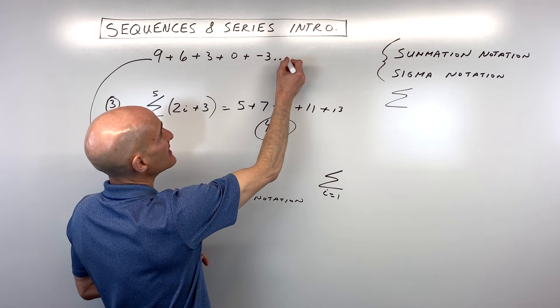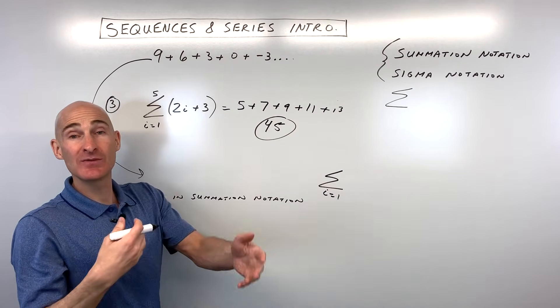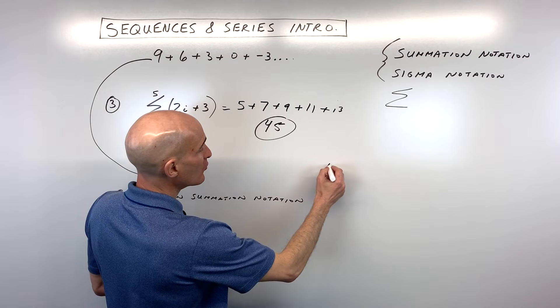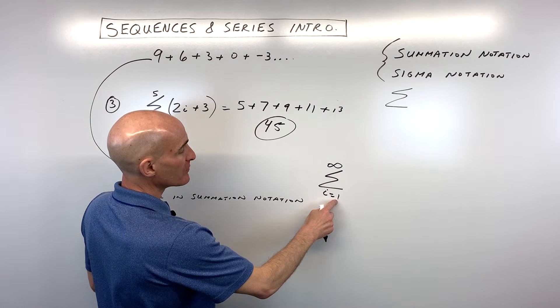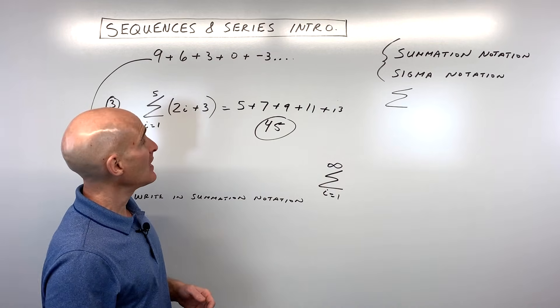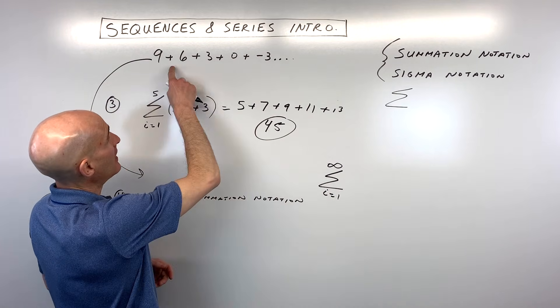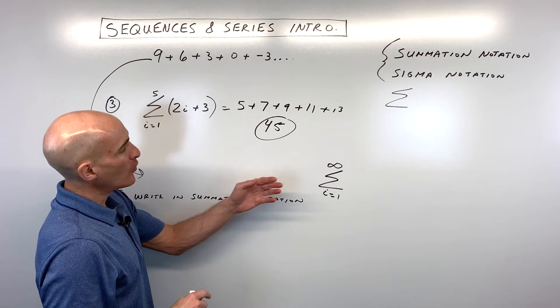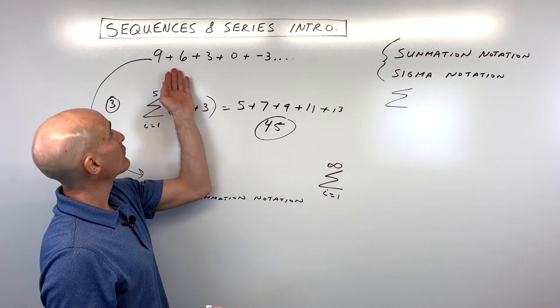So this is going to be going from one to five. But now say for example, this was like dot, dot, dot like that. So that means it keeps going forever and ever. And what we can do is then we can use this infinity symbol. So we're going from the first term to infinity. And this means that we're summing or adding up all the terms.